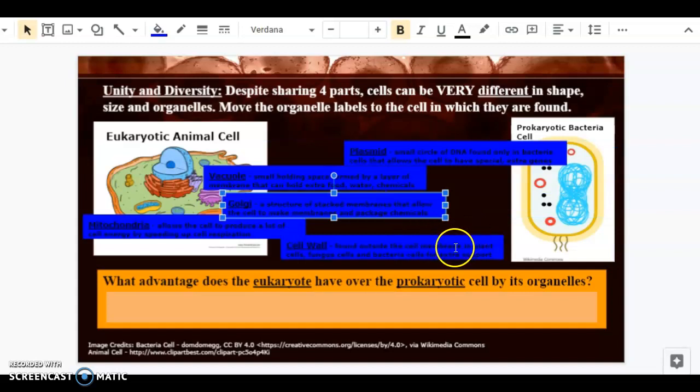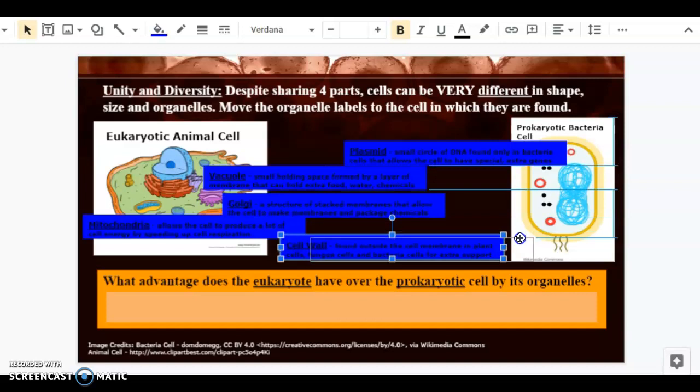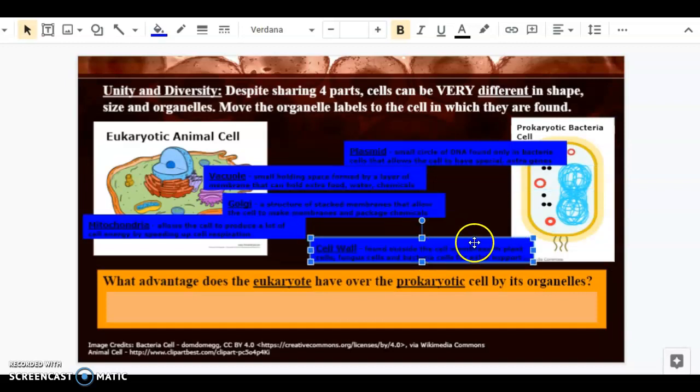And then we have the cell wall, which is found outside of a cell membrane. In a plant cell, you would find a cell wall, but this one is an animal cell and we don't have cell walls. However, this bacteria cell does. It is this outer layer of a lighter tan color.